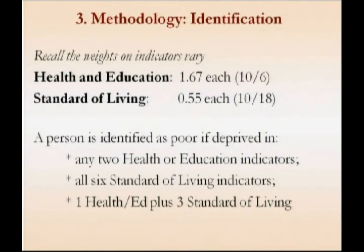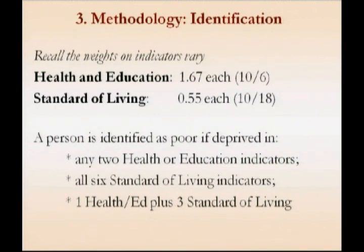Empirically, this makes a difference. In Gabon, for example, the difference between the number of people deprived in sanitation and those who were multidimensionally poor was quite high — 53% to 78% was the difference between the total headcounts in any of the ten indicators and the censored headcounts. In India, the range was slightly less — 96% of people having children out of school were considered multidimensionally poor. In identification, we are requiring a minimum of 30% and we are censoring.